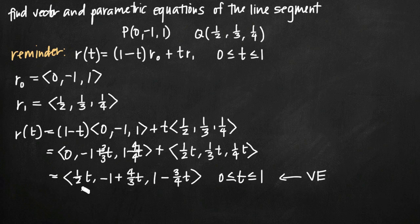And parametric equations are going to be really easy once we have the vector equation in this form, because all we're going to do is treat this first component as x, our second component as y, and our third component as z. And our parametric equations look like this: we get x = 1/2·t.